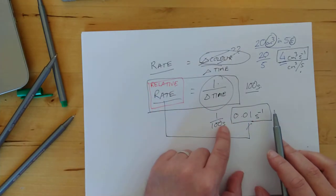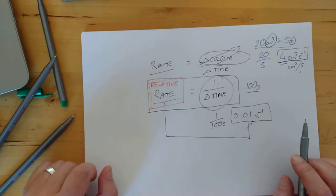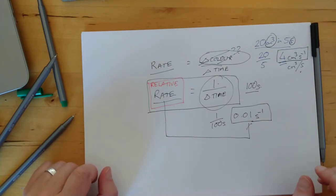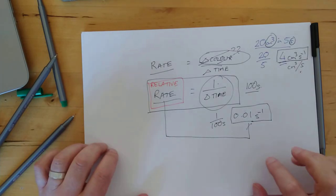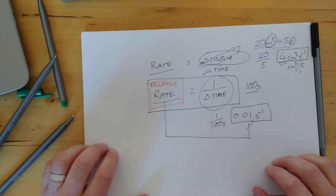And the units are, whatever you measured that in, to the minus one. Happy with that? That's the first concept. I might stop there and see if we can find a link to the iodine clock video and possibly potassium permanganate and oxalic acid reacting.